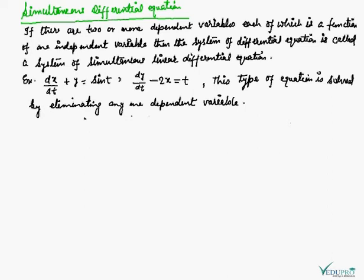Here we can see an example: dx/dt + y = sin(t) and dy/dt - 2x = t. This type of equation is solved by eliminating any one dependent variable.